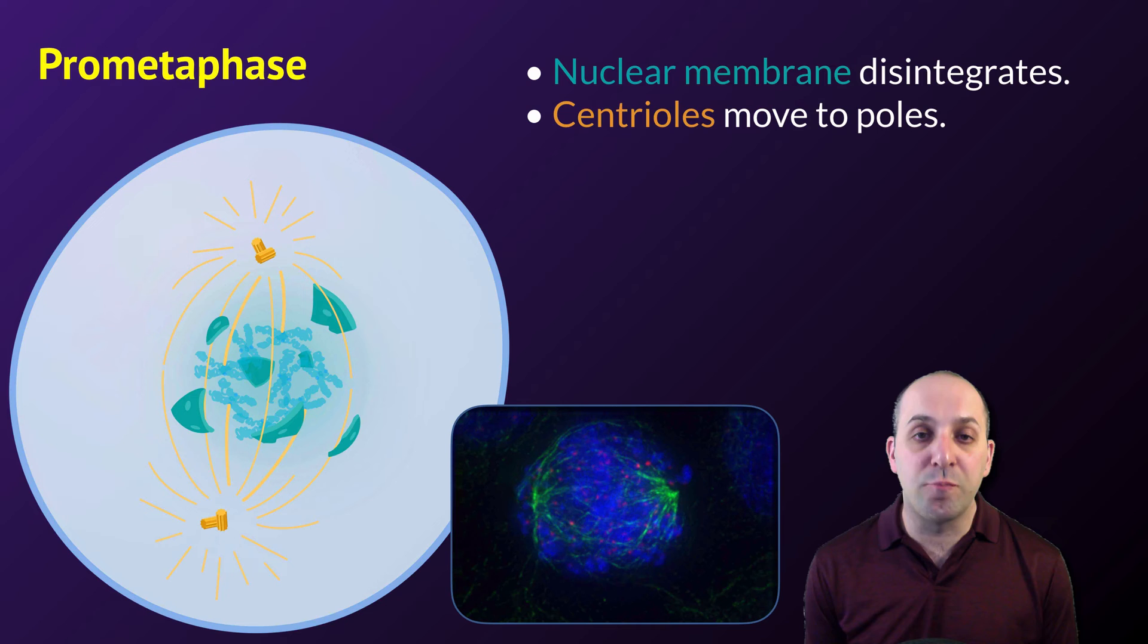The next stage of mitosis is known as prometaphase. During prometaphase, the nuclear membrane is going to disintegrate, leaving the chromosomes in the cytoplasm, and the centrioles, which are the structures that are giving rise to the mitotic spindle, will complete their movement to the opposite poles of the cell.